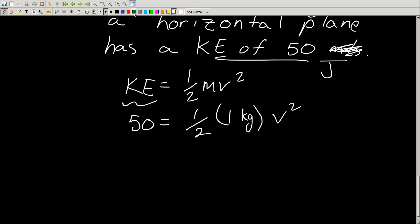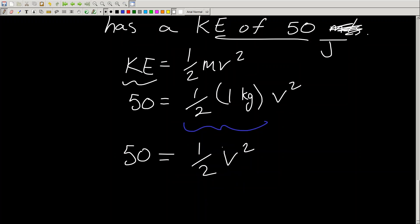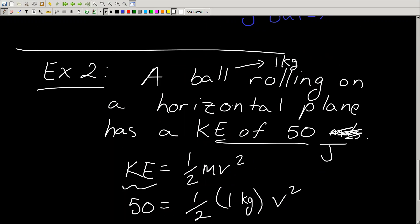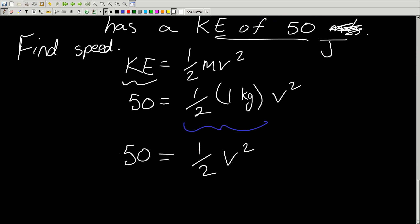So I have to use BEDMAS and then do opposite operations to isolate for v. So 1 half times 1 is equal to 1 half v squared. How do I isolate for v? Well, first I have to isolate for v squared. Keep in mind, what I'm trying to do is find the speed here. Find speed v.